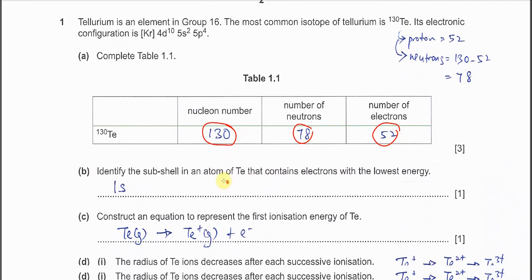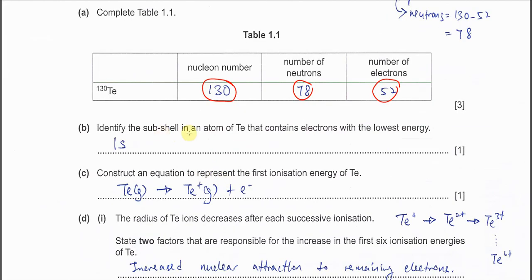Okay, part B, identify the subshell in an atom of Te that contains electrons with lowest energy. Lowest energy subshell, it must be 1s subshell. Okay, so this one is understandable because it's lowest energy.